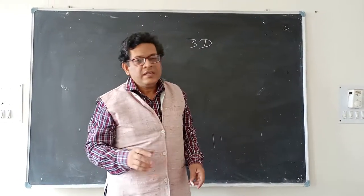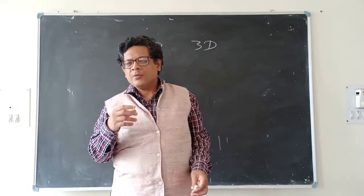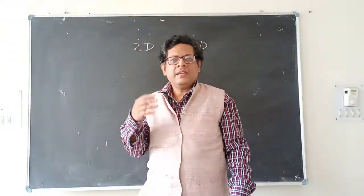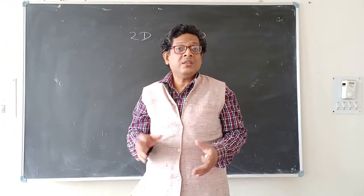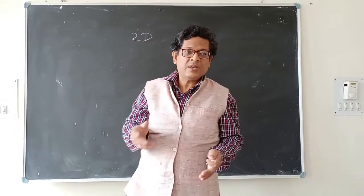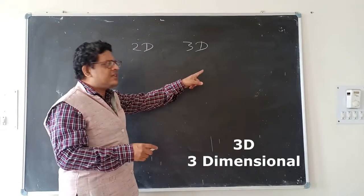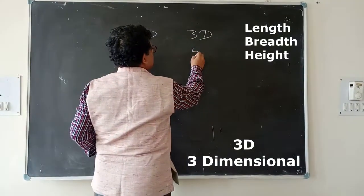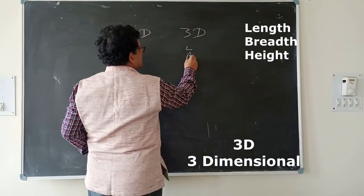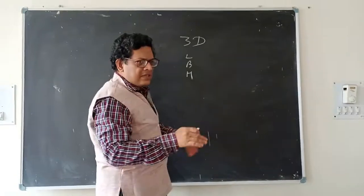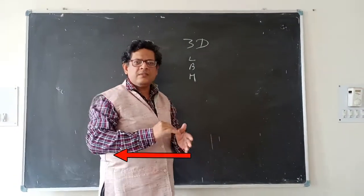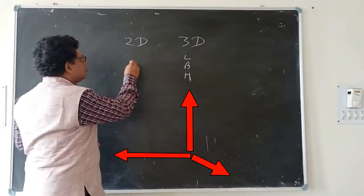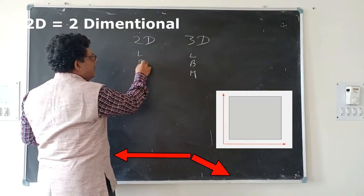Generally, in our books — in maximum books — they give the diagram or picture in 3D. What is 3D? 3D means three dimensions: length, breadth, and height. And 2D is two dimensions: length and breadth.